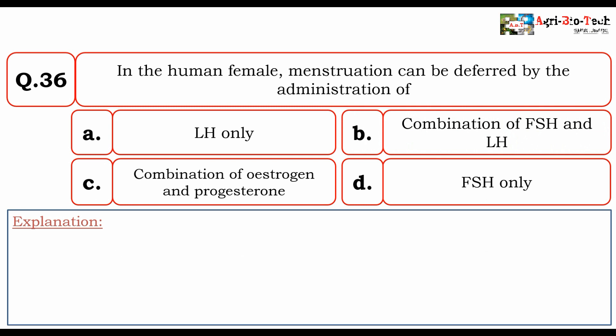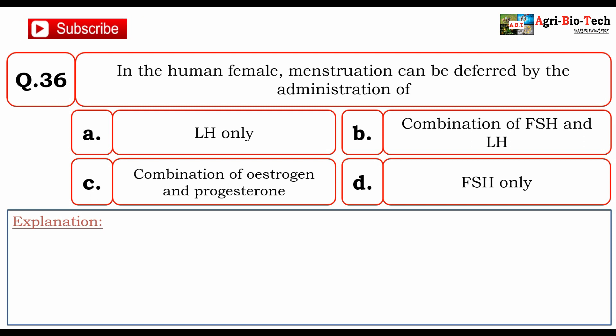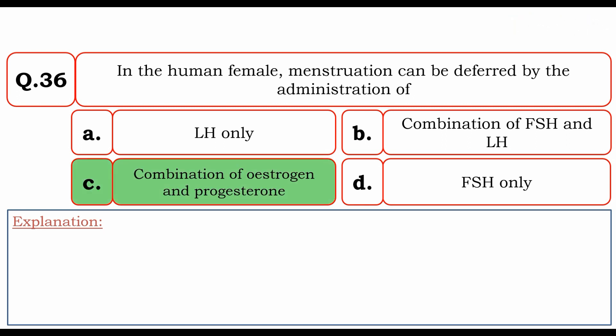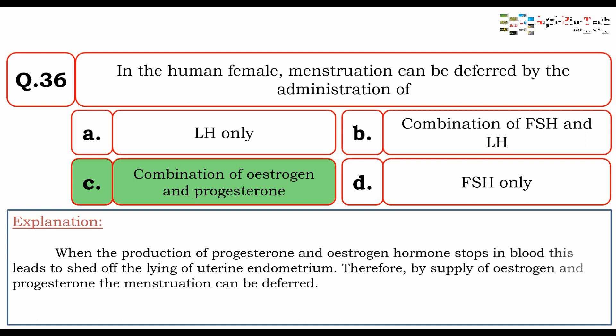Next question: in the human female, menstruation can be deferred by the administration of — A) LH only, B) combination of FSH and LH, C) combination of estrogen and progesterone, or D) FSH only. The correct option is C) combination of estrogen and progesterone. When the production of progesterone and estrogen stops in the blood, it leads to shedding of the uterine endometrium lining. Therefore, by supplying estrogen and progesterone, menstruation can be deferred.